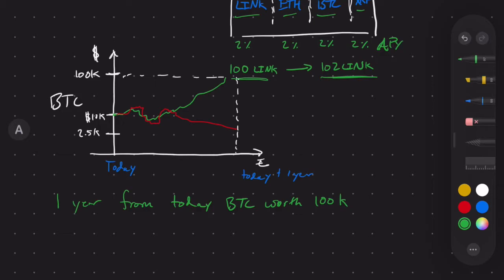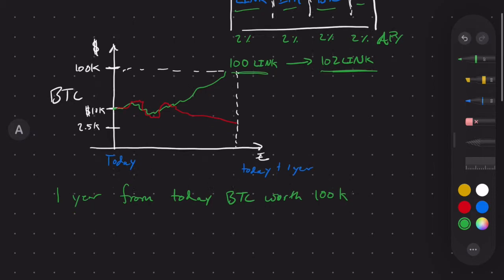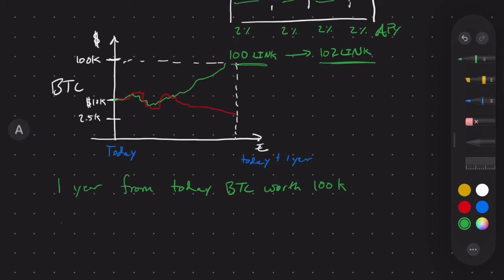So I think one year from today, Bitcoin is going to be worth $100,000 per Bitcoin. So that's what I think. Now I'm thinking about how do I leverage my money to make more money on this. What I can do is put my Bitcoin into this lending protocol that we described up here and use it as collateral.